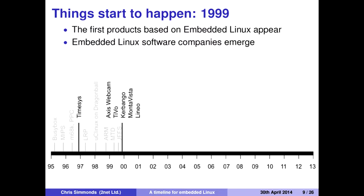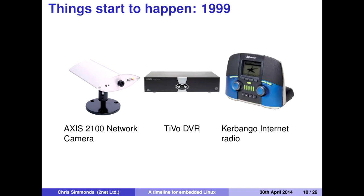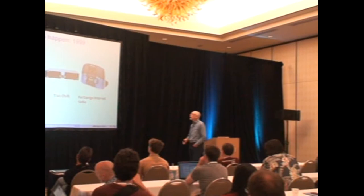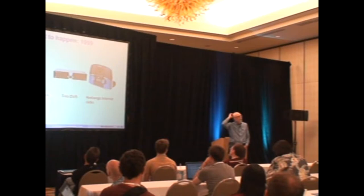So by 1999, all the pieces are in place. We can actually start doing interesting things with Linux as an embedded OS. 1999 is the tipping point at which Linux became an embedded operating system — it started being built into real products you could go out and buy. The Axis network camera is one example. Another important one was TiVo, the video recorder, which came out in 1999 running a PowerPC 403 chip with 16 megabytes of RAM and a 14 gigabyte hard drive.